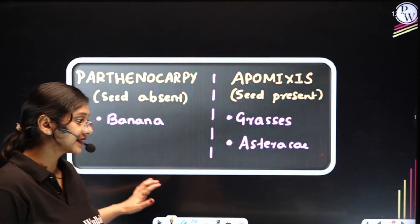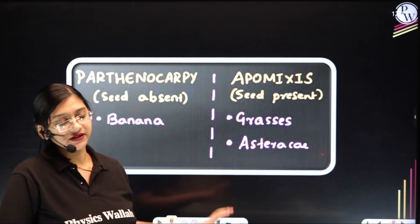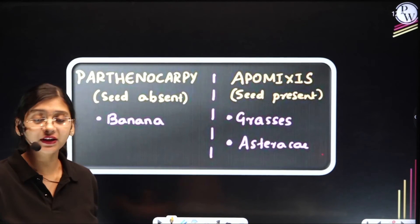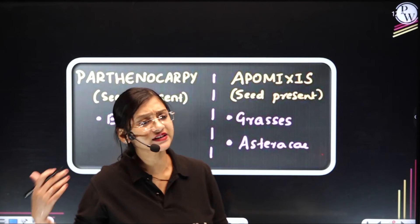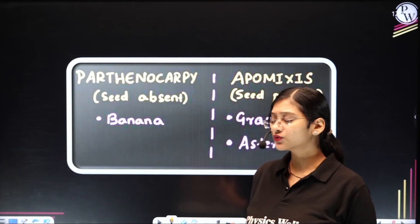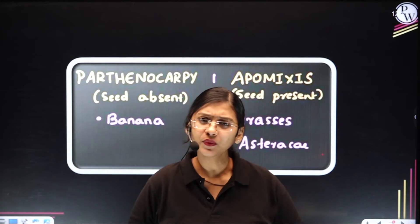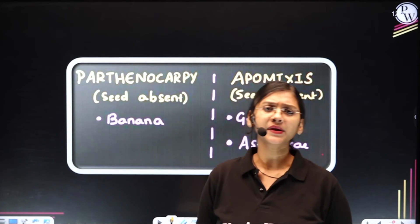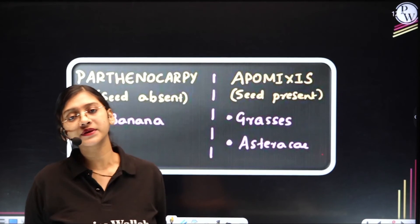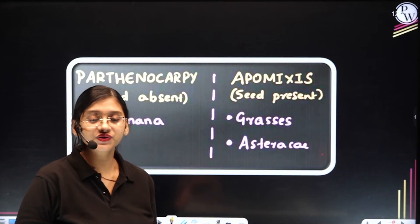The last concept is Parthenocarpy — Parthenocarpy is when fruit is produced without fertilization. Since there is no fertilization, the seeds would be absent. Naturally, Parthenocarpy can be seen in banana. We will also be able to induce Parthenocarpy. But naturally, Parthenocarpy means fruit without seed due to no fertilization.